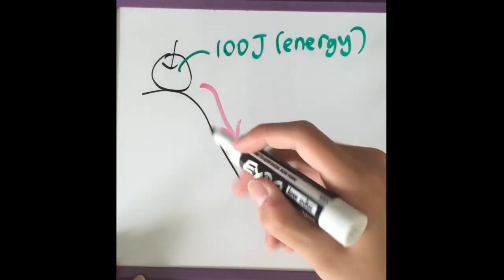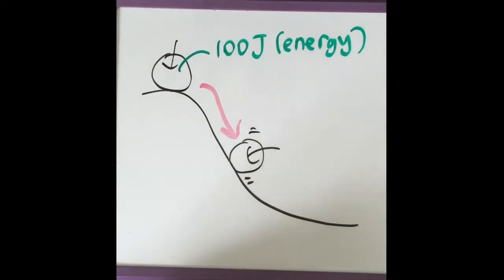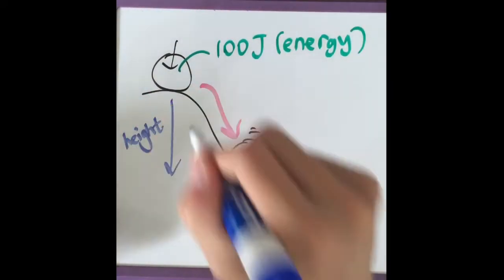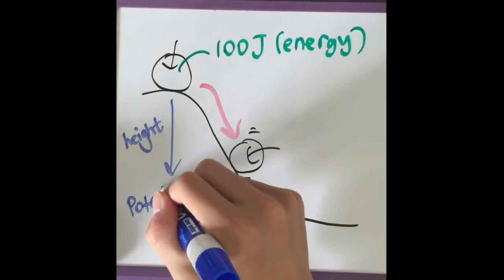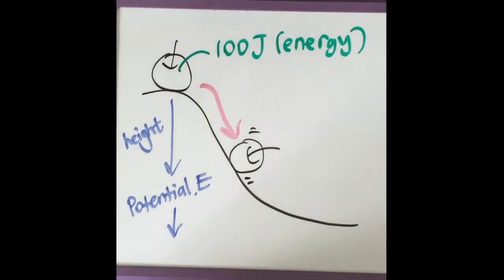As the height of the object drops as it rolls down, its potential energy drops, let's say to 75 joules. The object starts at 100 joules because the potential energy is 100 joules and the kinetic energy is 0 joules.